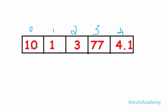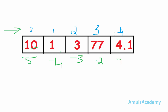Here we can see an example — these are the values: 10, 1, 3, 77, 4.1. The positive index is 0, 1, 2, 3, 4, and the negative index will be minus 1, minus 2, minus 3, minus 4, and minus 5. If I want to access the last element, I can write index as 4 or minus 1.